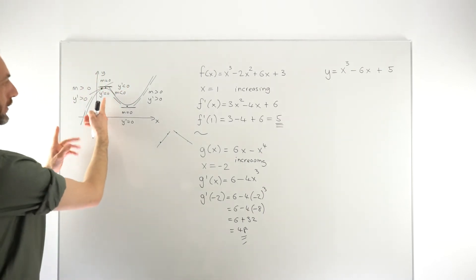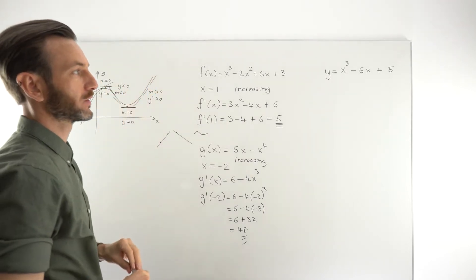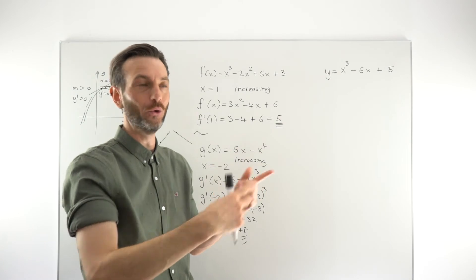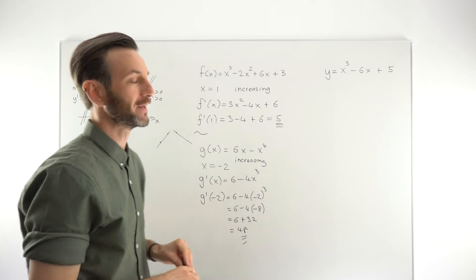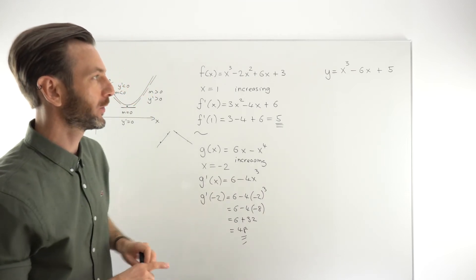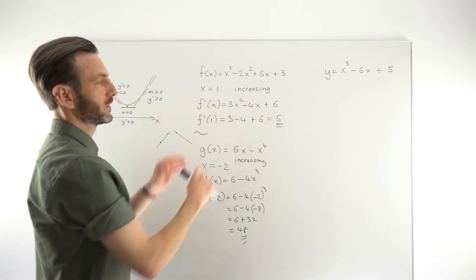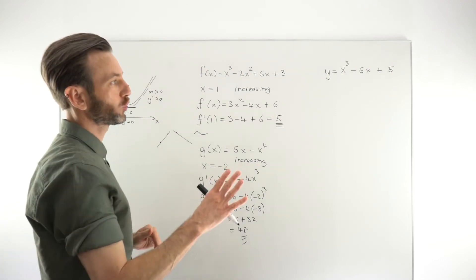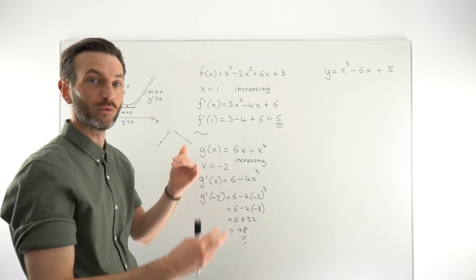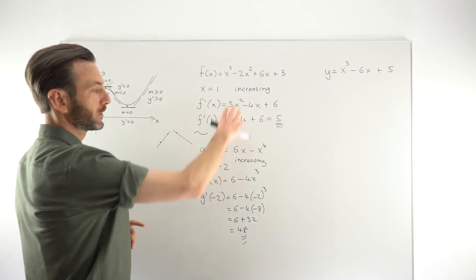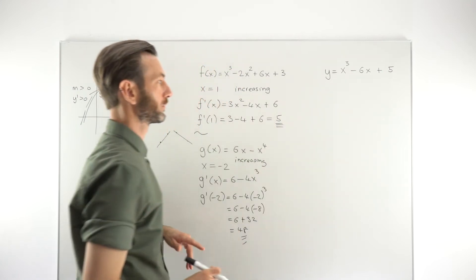To do this, we need to jump ahead a little to something called stationary points, which you may not be familiar with yet. This type of question often comes into the scenario of increase and decrease, but you need to know about stationary points — also called critical points. If you're not sure about those, check out the class on that alongside this one. These first two examples are fine without stationary points; this third one goes a little further for completeness.